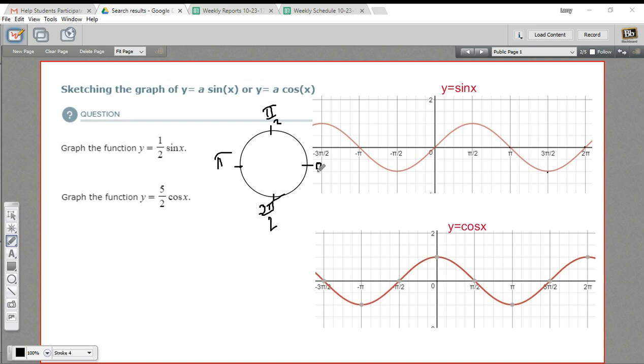The cosine is pretty similar, except of course it's the x-coordinate. So at 0, it starts at 1. And by the time it gets to π over 2, it's down to 0. At π, it's down to negative 1. And then it goes back up to 0 and up to 1 again at 2π.